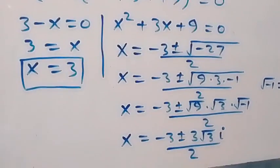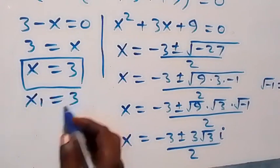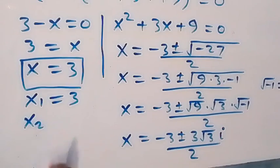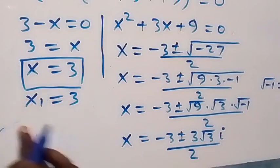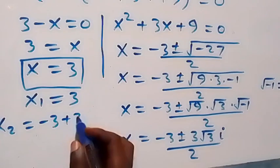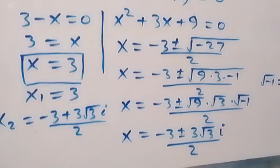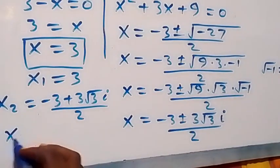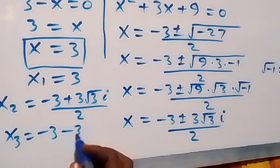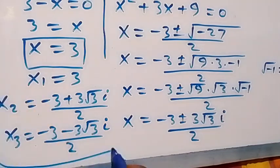So here we have two complex solutions on this side. If x1 is the first solution, that is 3, then x2 equals minus 3 plus 3i√3 over 2, and the last solution x3 gives us minus 3 minus 3i√3 over 2. So here we have these three solutions to this given problem.